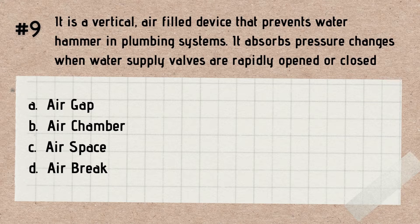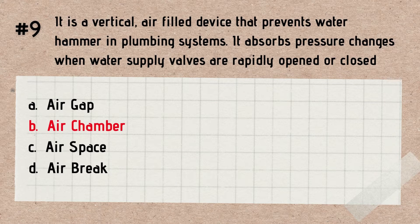Answer: Air Chamber. Remember, an air chamber is a vertical air-filled device that prevents water hammering in plumbing systems and absorbs pressure changes when water supply valves are rapidly opened or closed.